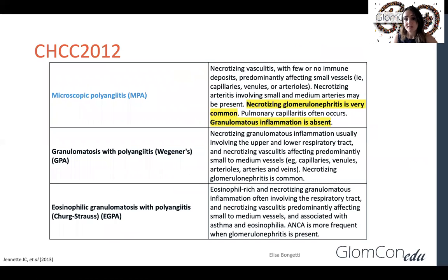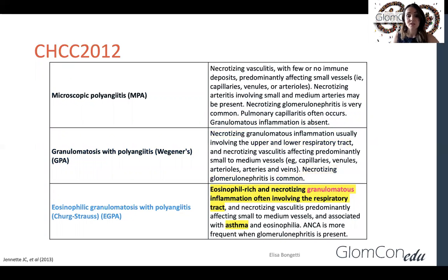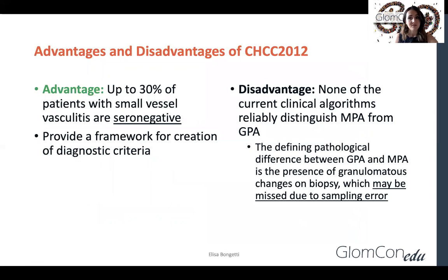Microscopic polyangiitis often causes a necrotizing glomerulonephritis, and importantly, granulomatous lesions are absent in this disease. Granulomatosis with polyangiitis involves necrotizing granulomatous inflammation and often affects the upper and lower respiratory tract, though glomerulonephritis is also common. In eosinophilic granulomatosis with polyangiitis, we typically see eosinophil-rich and necrotizing granulomatous inflammation involving the respiratory tract, and asthma is commonly associated. The advantage of the Chapel Hill nomenclature is that up to 30% of people with small vessel vasculitis are seronegative, so understanding typical clinical presentation differences is important in helping make a diagnosis.